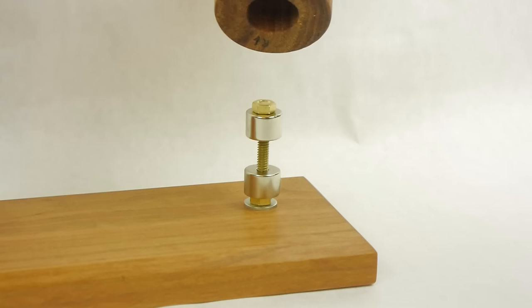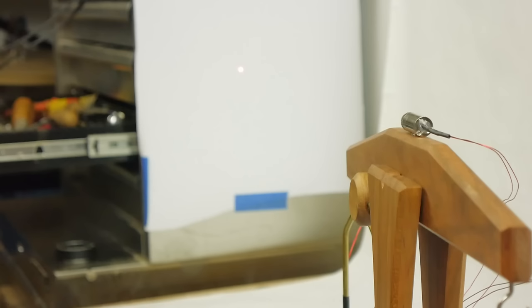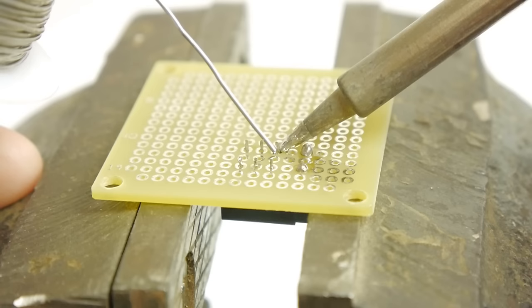One commenter, Don Conley, had some good ideas about moving the electrical components off the balance beam to eliminate this issue entirely. He suggested swapping the permanent magnets into the platform so that the coils are stationary, and using a mirror on the beam with a stationary laser rather than having the laser attached to the beam itself.